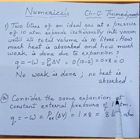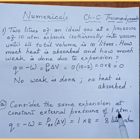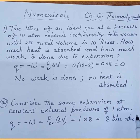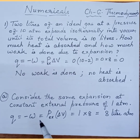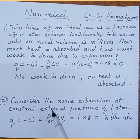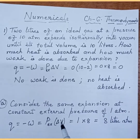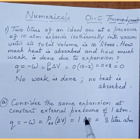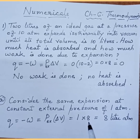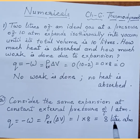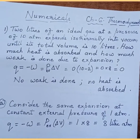Consider the same expansion at a constant external pressure of 1 atmosphere. Q is equal to minus W, which equals P_external times delta V. Here P_external is 1 atmosphere and delta V is 8 liters, so the answer is 8 liter-atmosphere.